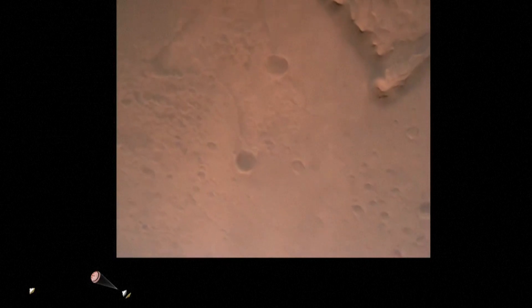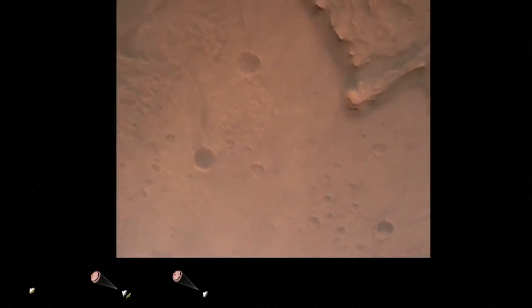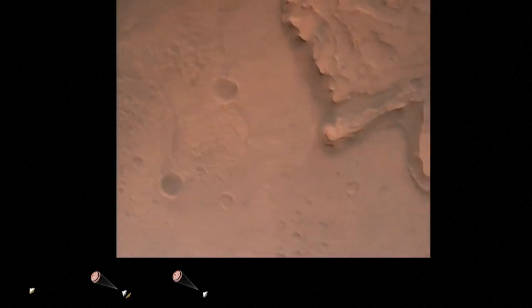Nav filter converged. Velocity solution 3.3 meters per second, altitude 7.4 kilometers. Now has radar lock on the ground. Current velocity is about 100 meters per second, 6.6 kilometers above the surface.